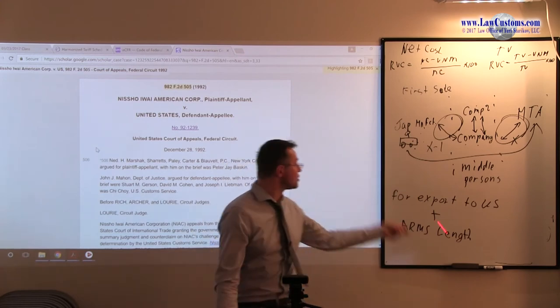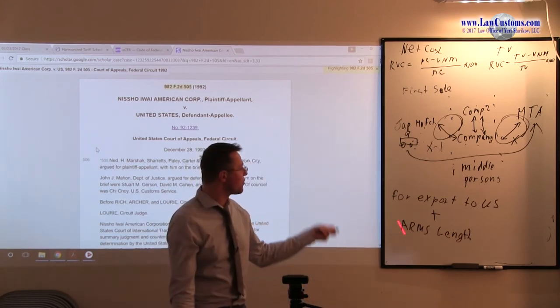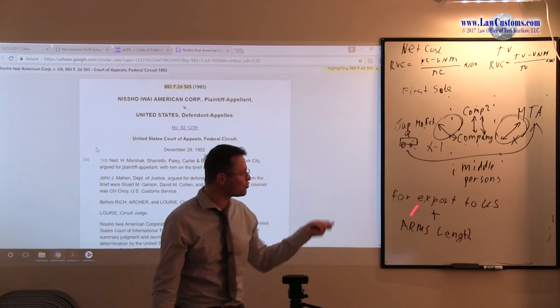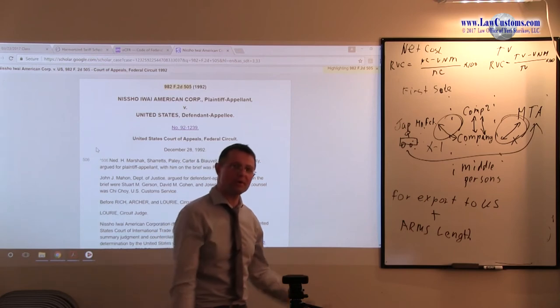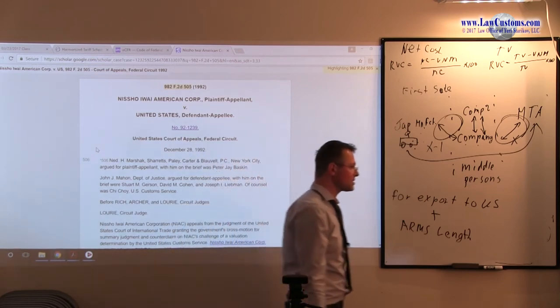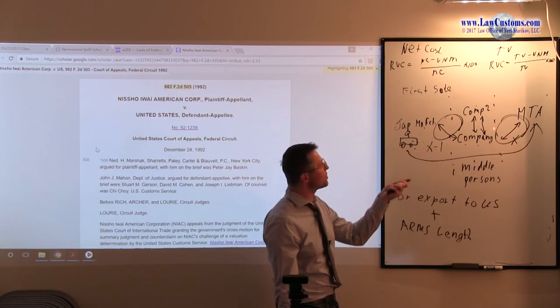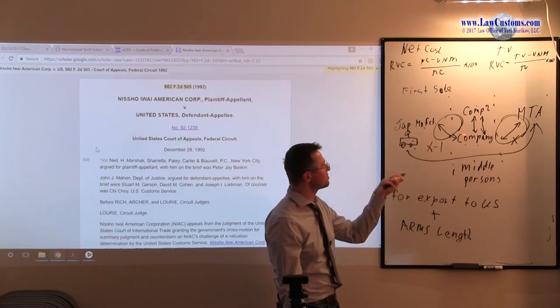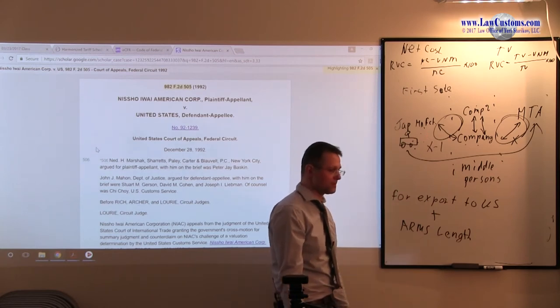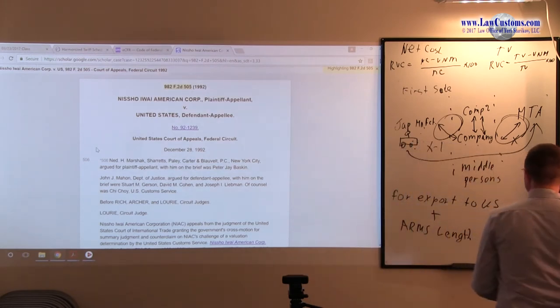So, the court said, all right, you can use this price. You can use X-1 price for this particular transaction because you meet this criteria. So, MTA ended up paying lower duties for their train cars than it would otherwise have to if they used the contract price between the middle person and MTA as opposed to Japanese manufacturer and the middle person. So, this is the caveat which we are talking about here.